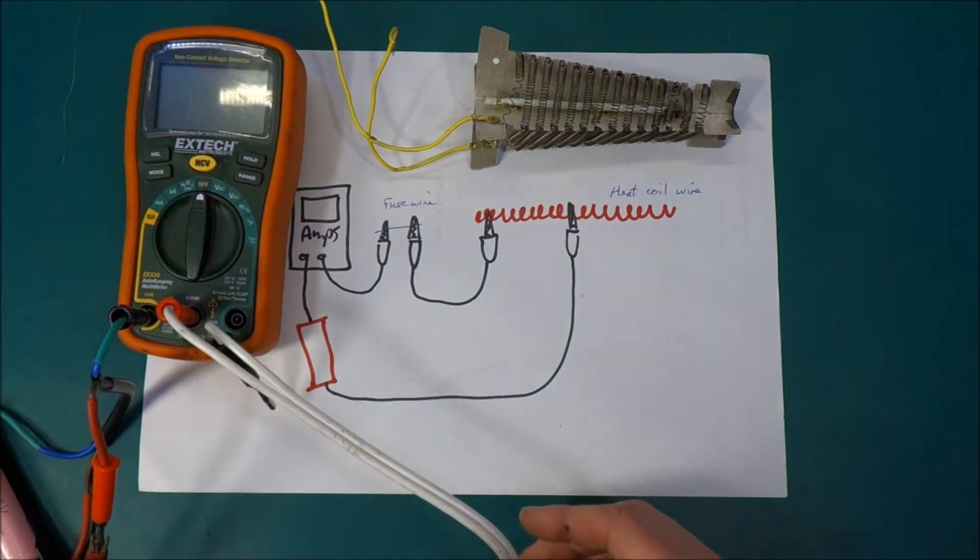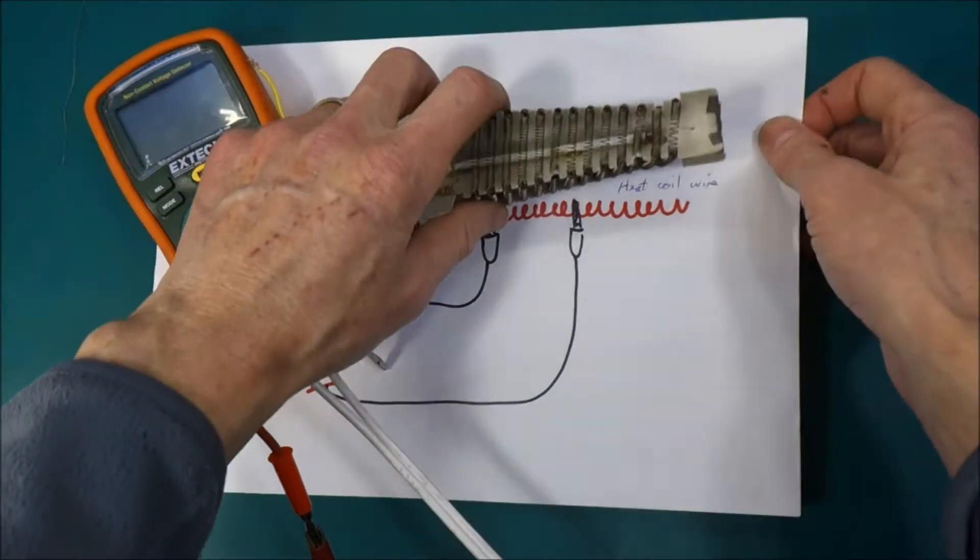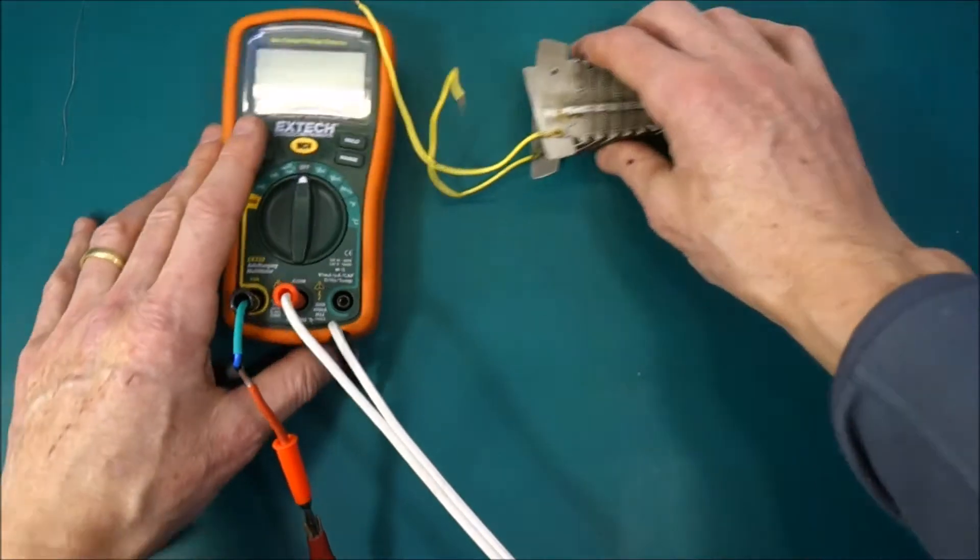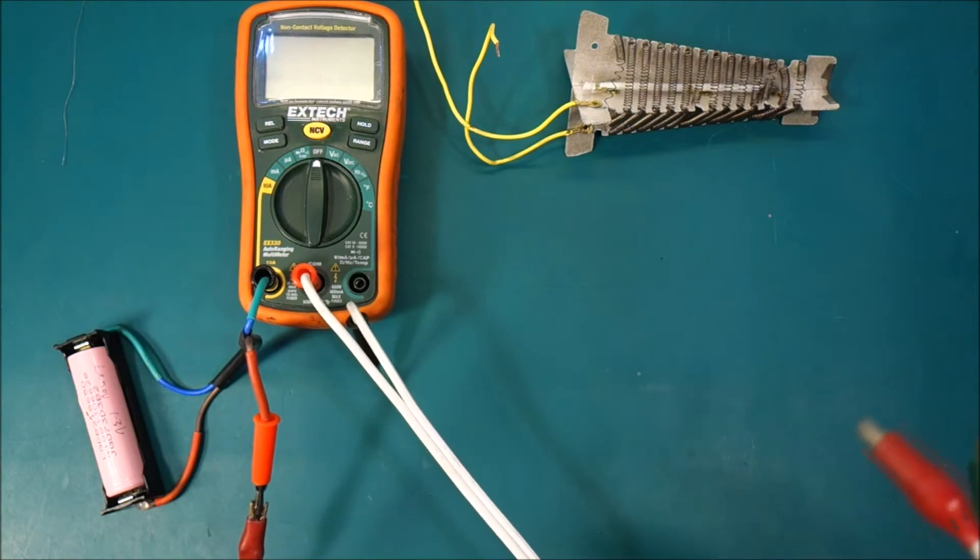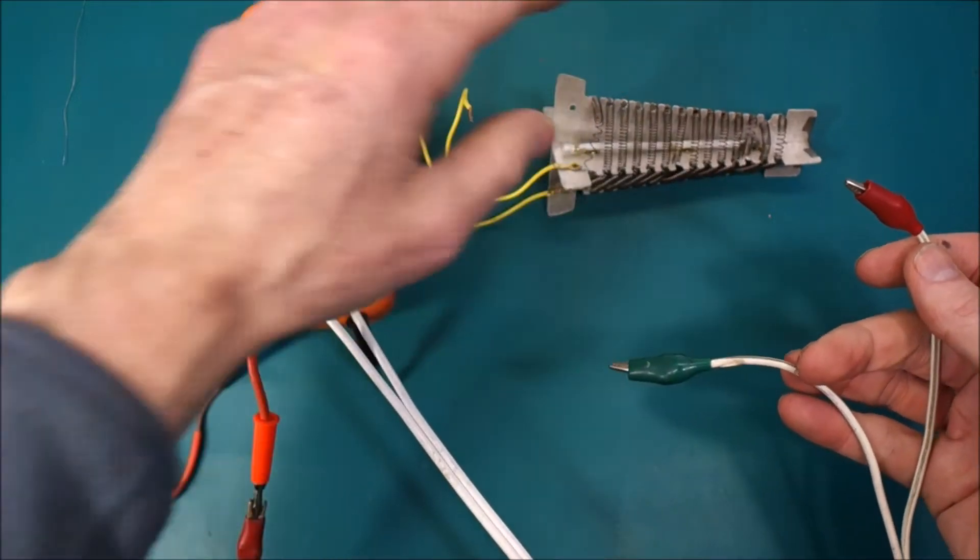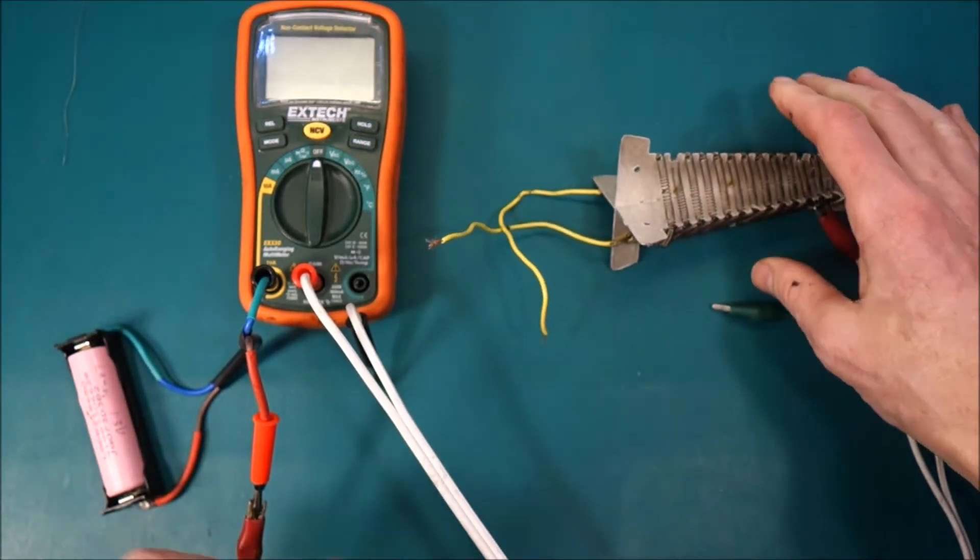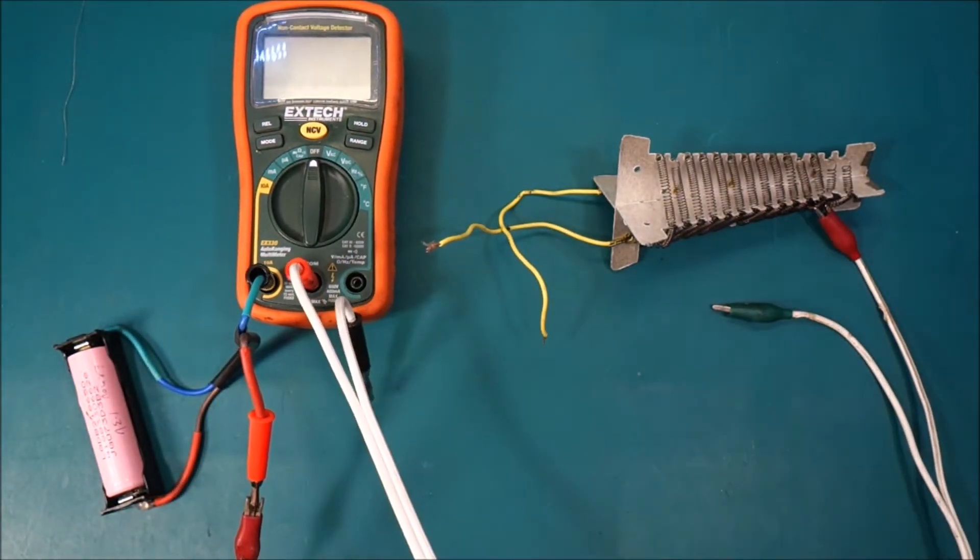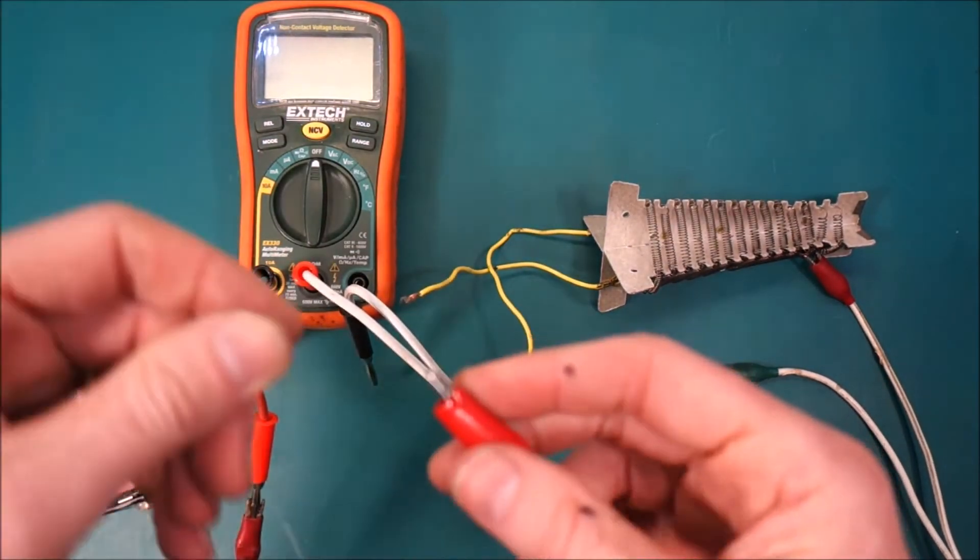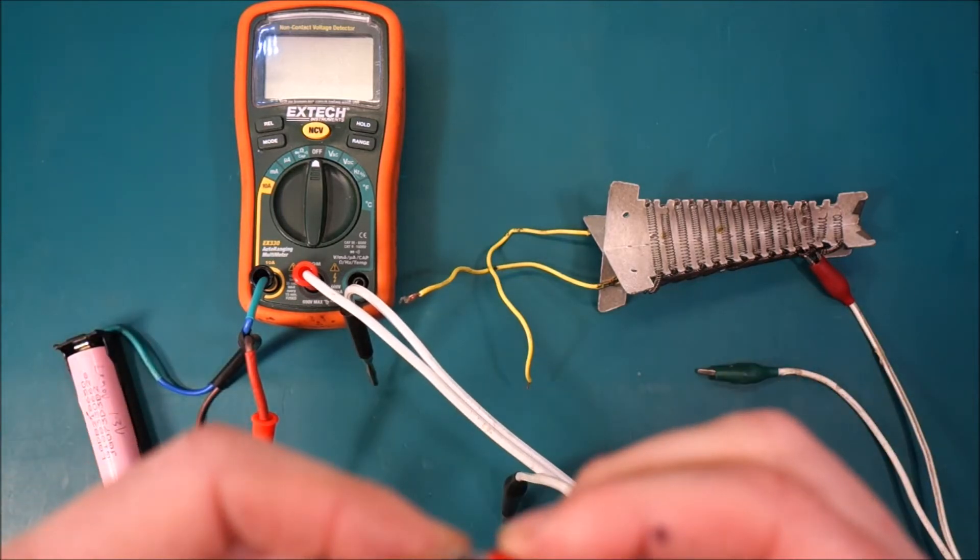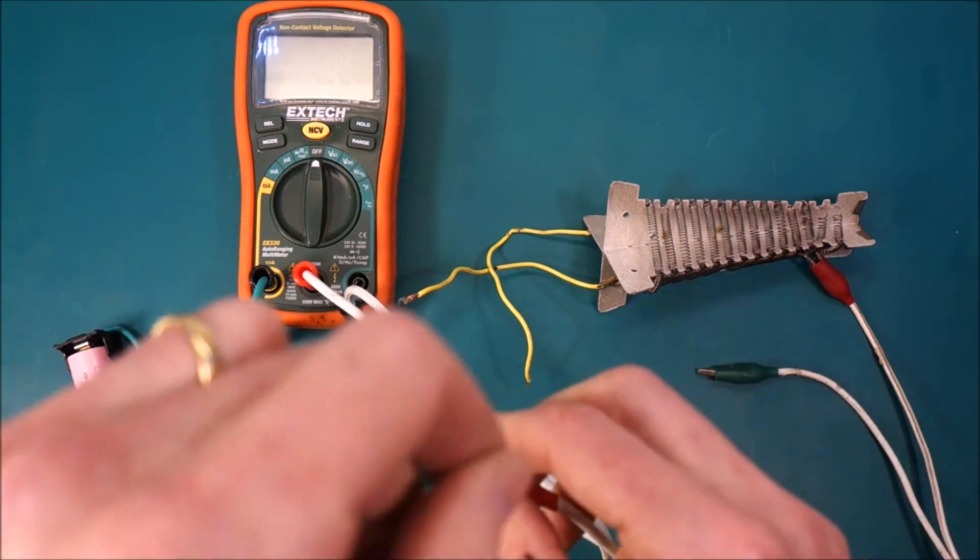Here's the multimeter connected to a battery. I'll put that out of the way. Multimeter battery connected to one end of the element. One end of the element there. Then the meter goes to a piece of fuse wire. So I'll wrap that around there to get a nice good connection.